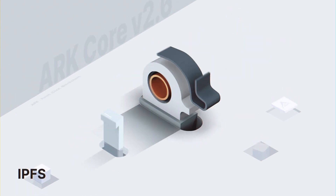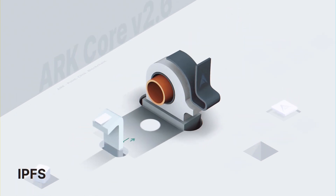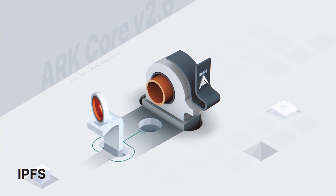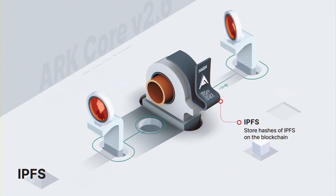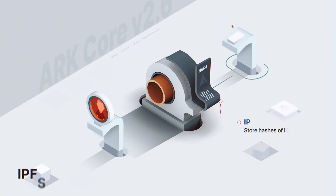IPFS: The new core version allows for storage of IPFS-compliant hashes directly on the blockchain, referencing locations of decentralized files.